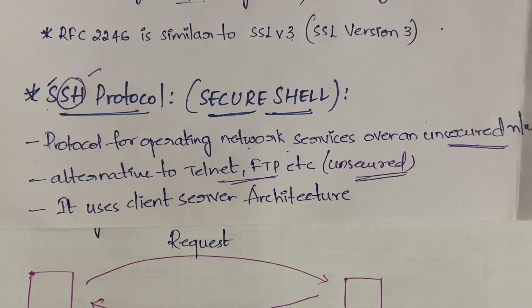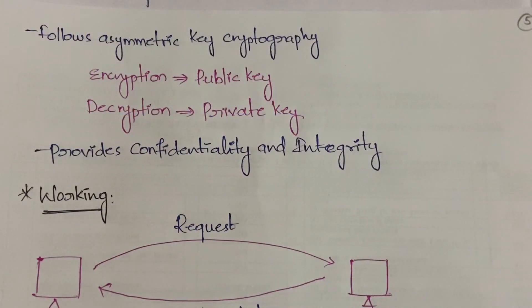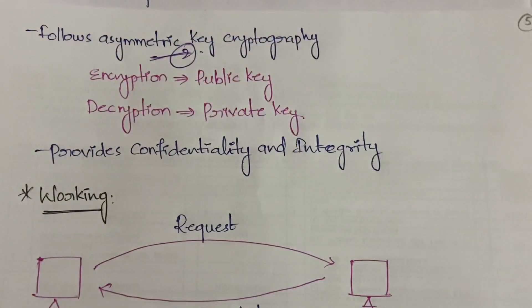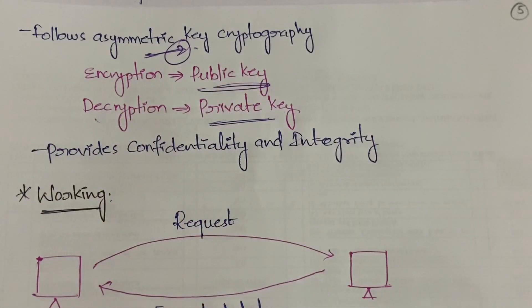SSH uses the client-server architecture. It is a protocol through which you can access the services of an unsecured network securely — without any fear that your data may be lost, stolen, or modified. It follows asymmetric key cryptography, using two types of keys: a public key for encryption and a private key for decryption, providing confidentiality and integrity of the data.